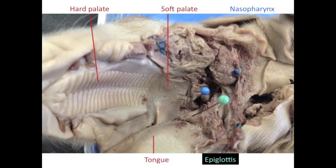This is the oral cavity of the fetal pig, anteriors to the left. The ridged structure is the hard palate, and just posterior to that is the soft palate. Posterior to that is the opening that leads up into the nasopharynx and the nasal cavity. The tongue is labeled there on the bottom, and the epiglottis is the structure that can close and block off the trachea.